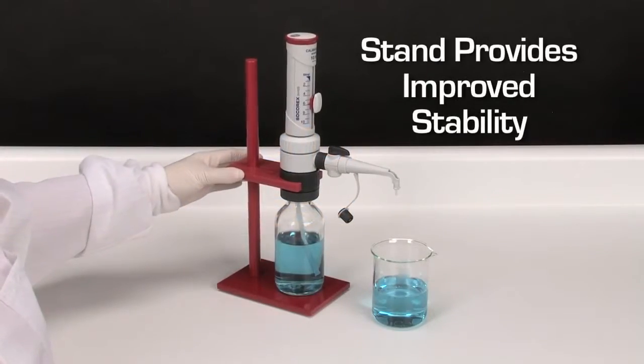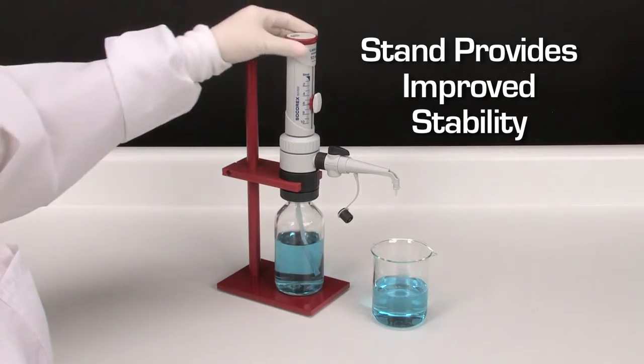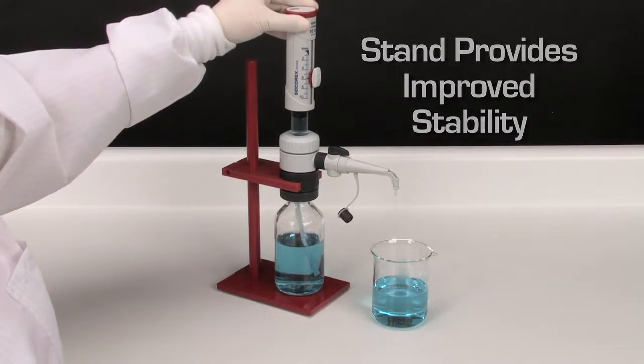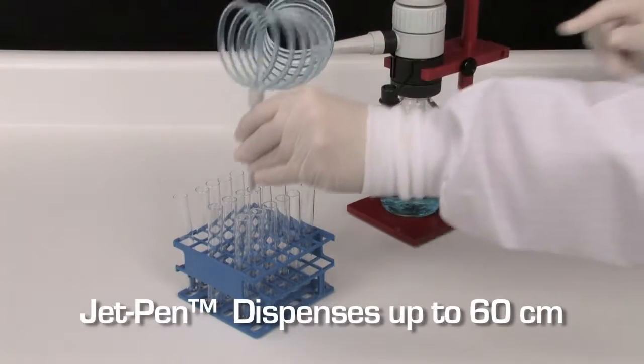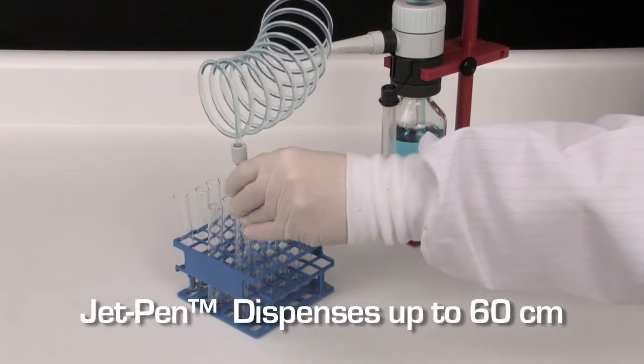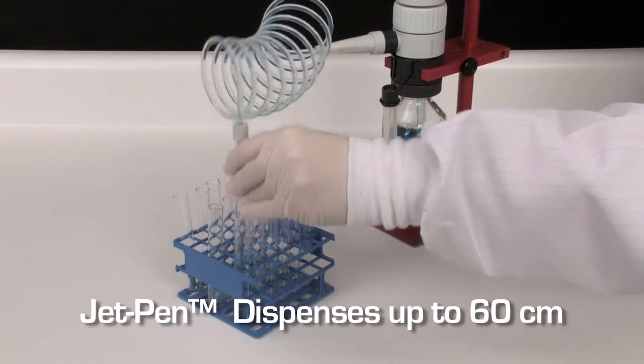The specially designed stand holds a dispenser when the dispenser is attached to a small bottle. Spiral tubing and the delivery jet pen help dispense material into vessels with maximum comfort within a 60 cm distance.